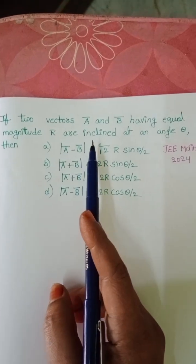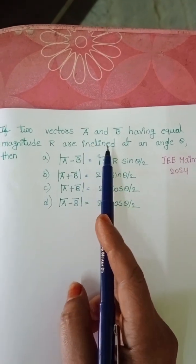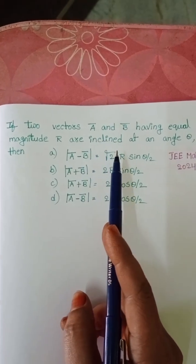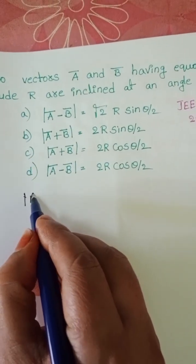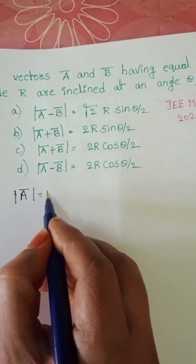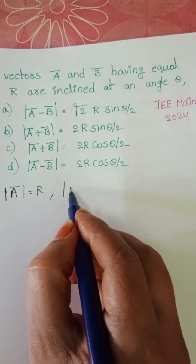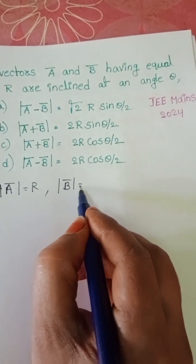In this question, we know two vectors a bar and b bar. Magnitude of these two vectors equals r. Magnitude of the first vector mod a bar equals r, and magnitude of the second vector also equals r.